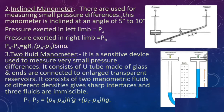The two-fluid manometer, also called the differential manometer, is a sensitive device used to measure very small pressure differences. It consists of a U-tube made of glass with enlarged transparent reservoirs at the ends, containing two manometric fluids of different densities giving a sharp interface. The three fluids are immiscible. P1 − P2 = (ρb − ρa)h'g + (ρc − ρb)hg.